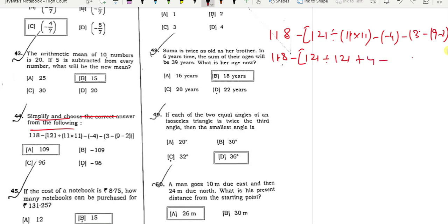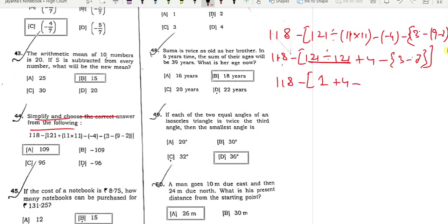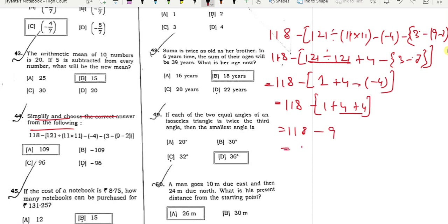Next: 118 minus 121. To show you, 121 divided by 121 is equal to 5. We have minus 7 plus 3, so minus 7 plus 3 is equal to minus 4. Next, 118 minus 1 plus 4 equals minus 4. How do we have 118 divided by 121? One one eight minus nine, so 118 minus 9 equals 109. Put the answer: the answer is 109.